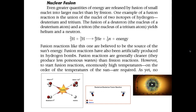Now we move on to nuclear fusion, the other type of nuclear reaction, which has a lot of international interest. This is the reaction our Sun and stars undergo. Very light nuclei come together to make a slightly heavier nucleus — in this case tritium and deuterium, isotopes of hydrogen, come together to make helium, possibly releasing a neutron and energy.